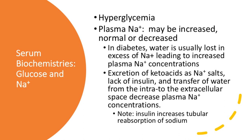In serum biochemistries, focusing first on glucose and sodium: you have hyperglycemia, the definition of diabetes if it's persistent. Plasma sodium can be increased, normal, or decreased. In diabetes, water is lost in excess of sodium during a polyuric condition. You can also have an excretion of ketoacids as sodium salts, and together with the lack of insulin and the transfer of water from the intra- to the extracellular space, this can actually decrease sodium concentrations. It should be noted that normally insulin increases tubular reabsorption of sodium.